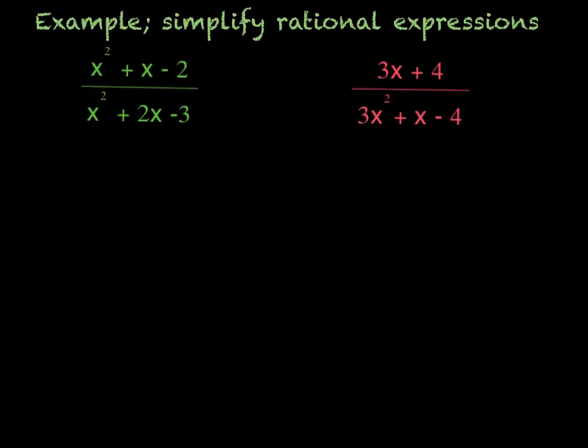For this next example, we have x squared plus x minus 2 over x squared plus 2x minus 3. In these, we want to just factor out and then cancel if we can.